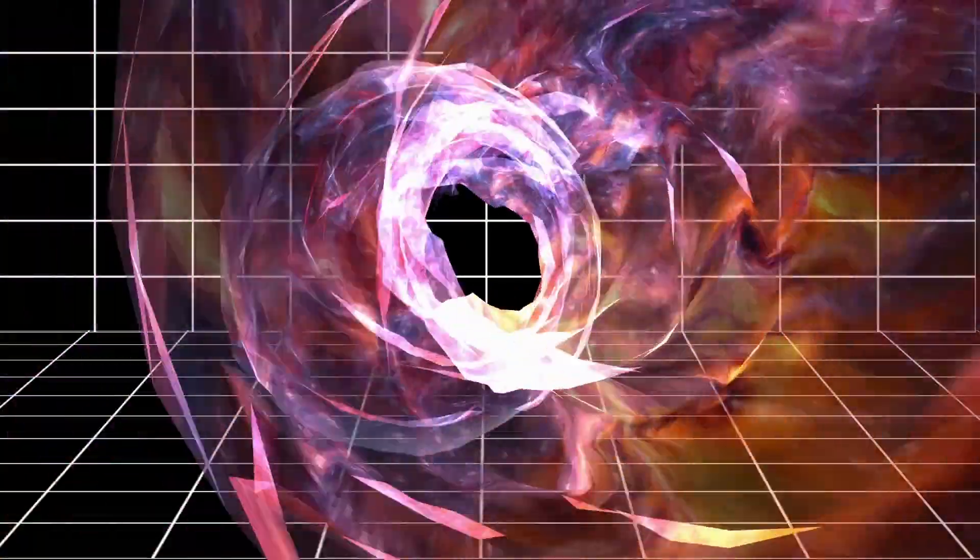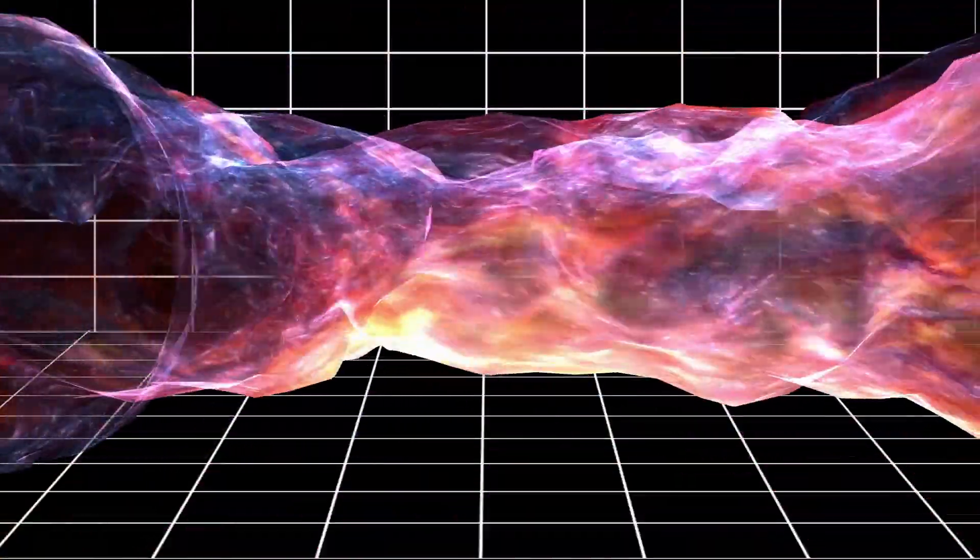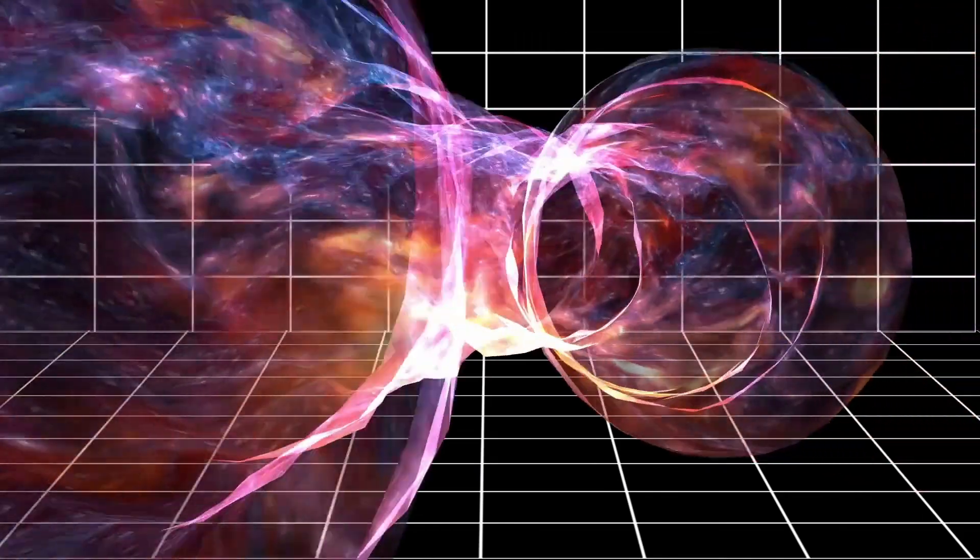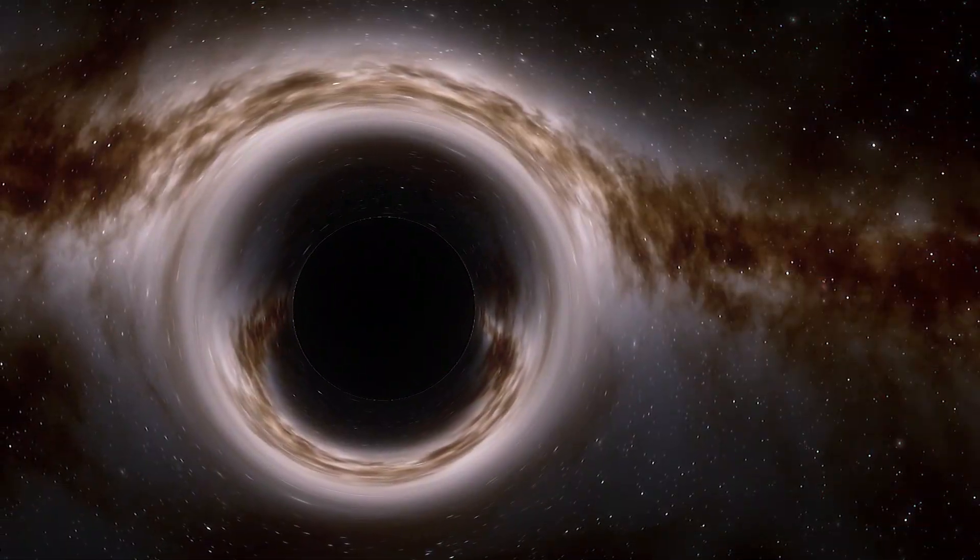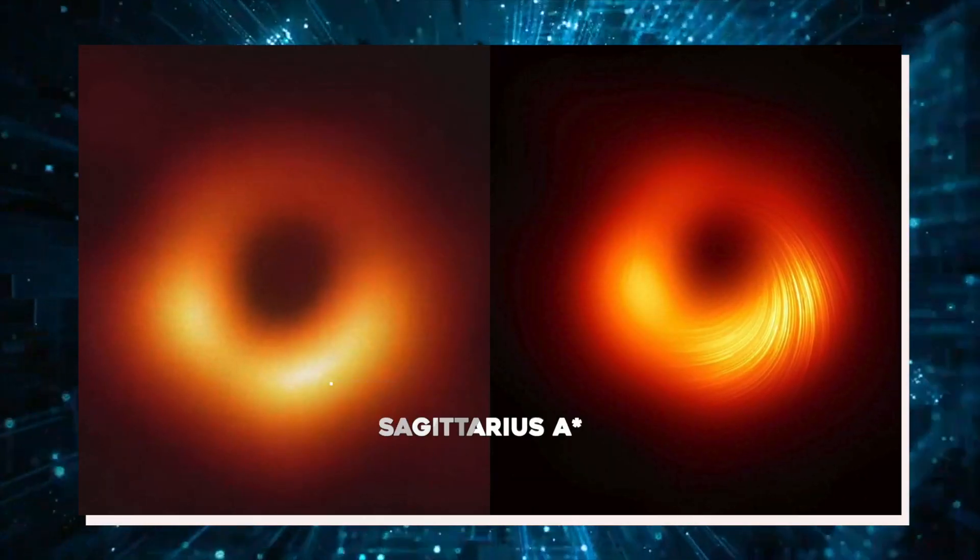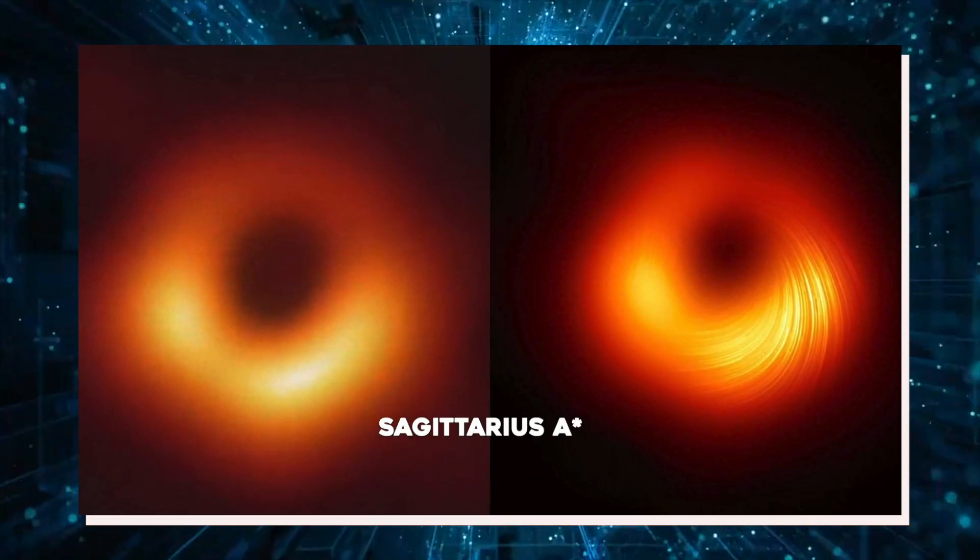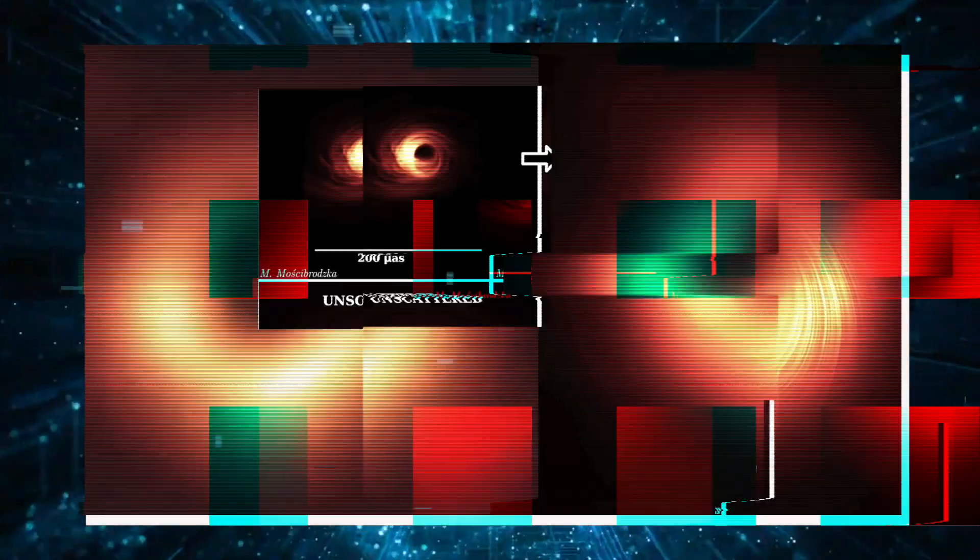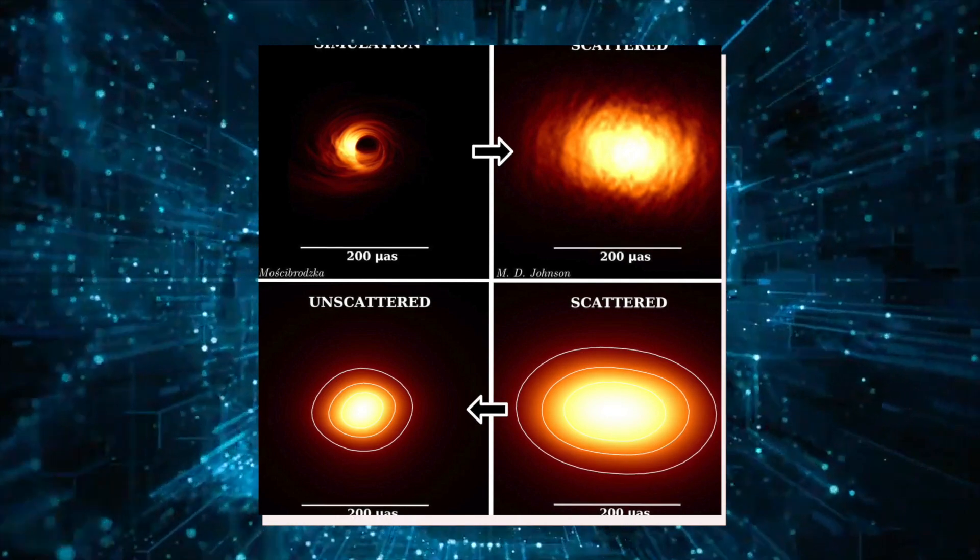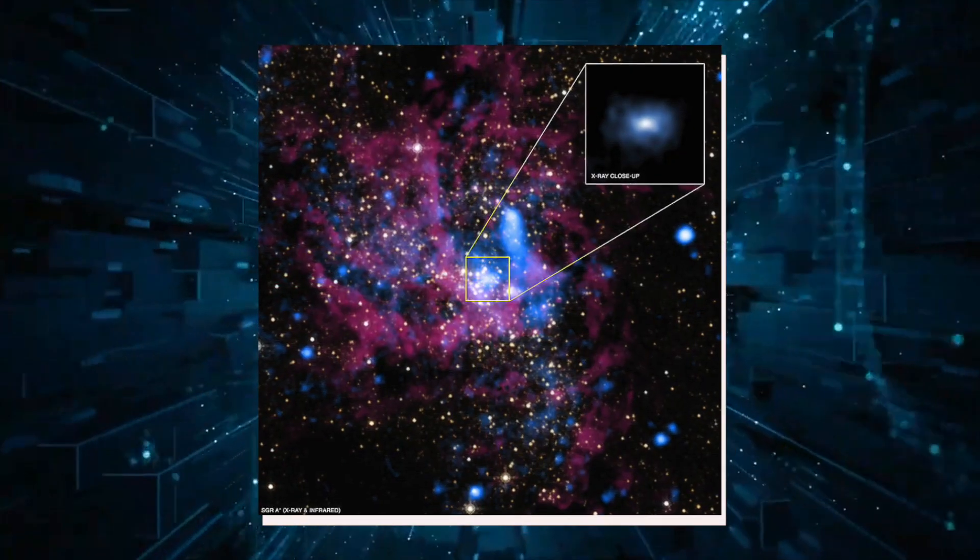The Milky Way could contain over 100 million black holes, though detecting these gluttonous beasts is very difficult. At the heart of the Milky Way lies a supermassive black hole, Sagittarius A. The colossal structure is about 4 million times the mass of the sun and lies approximately 26,000 light-years away from Earth.